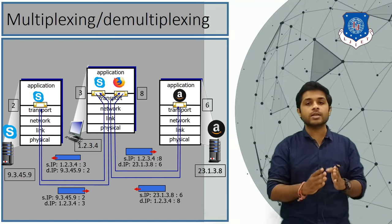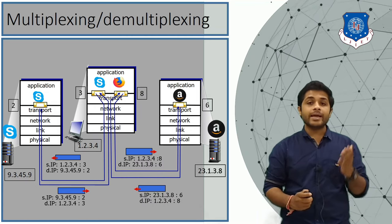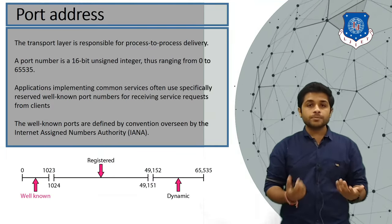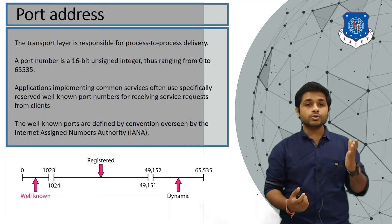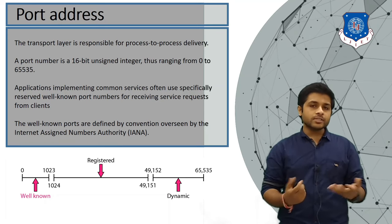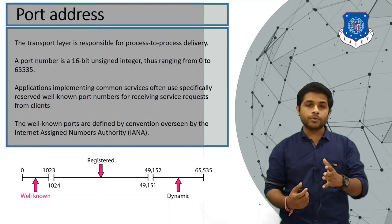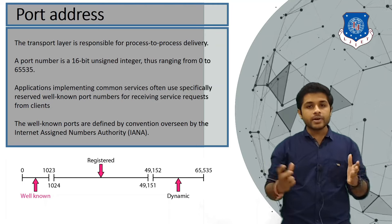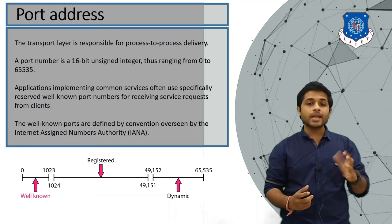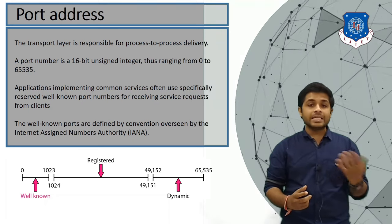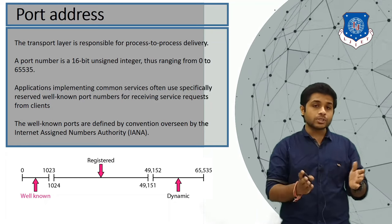It is the responsibility of the transport layer to add port addresses. A port address is a 16-bit number, giving a range of 2 raised to 16, meaning ports 0 to 65,535 are available. Port addresses are generally assigned by your operating system, and some port numbers are fixed, known as well-known ports. Ports 0 to 1023 are well-known ports, used by popular applications such as DNS, FTP, or email. You cannot use ports in the range 0 to 1023 for your own applications.